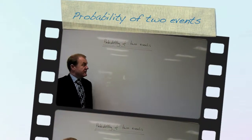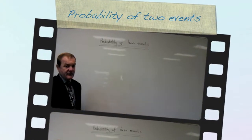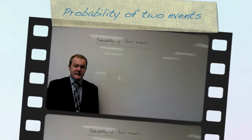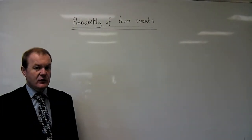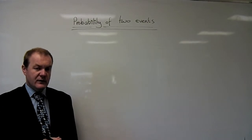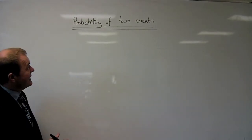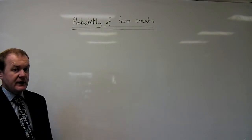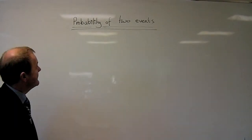When we're looking at the probability of more than one event, or two events taking place, it can sometimes be a lot easier to understand what's going on if you make a table or a grid. We're going to have a look at a couple of examples — one table, one grid — so we can see how we can organise our thoughts and calculate the probability of two events taking place.